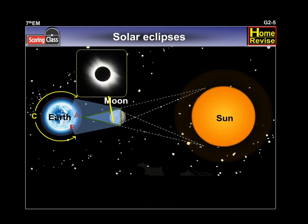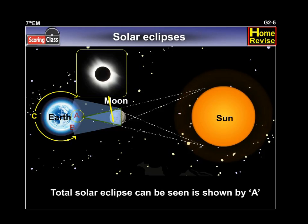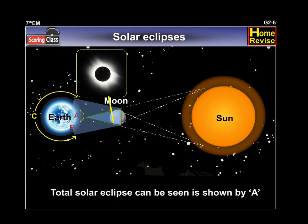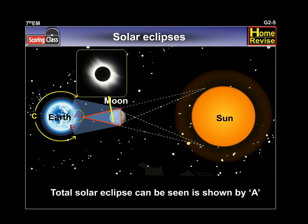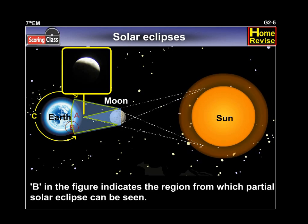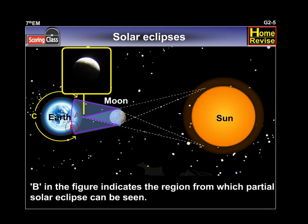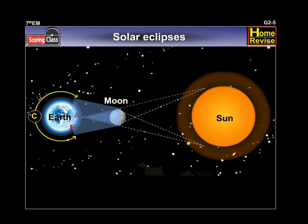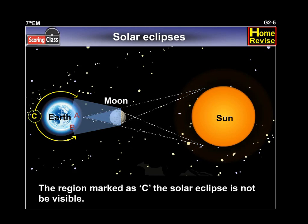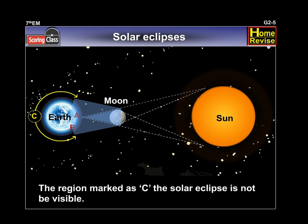The region from which a total solar eclipse can be seen is shown by A in the figure. B in the figure indicates the region from which partial solar eclipse can be seen. Note that from the region marked as C, the solar eclipse is not visible.